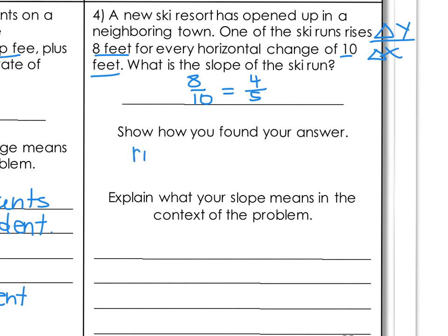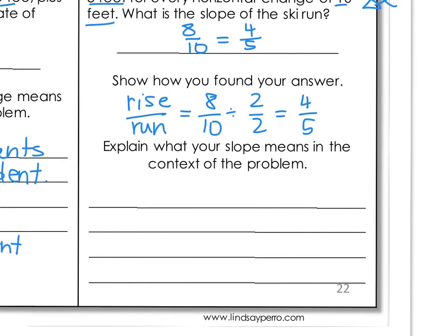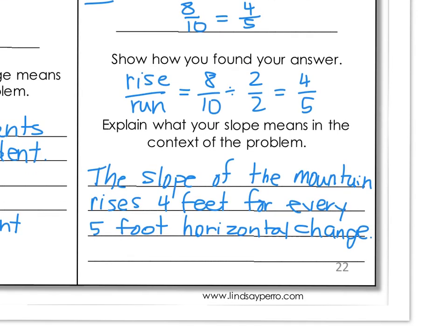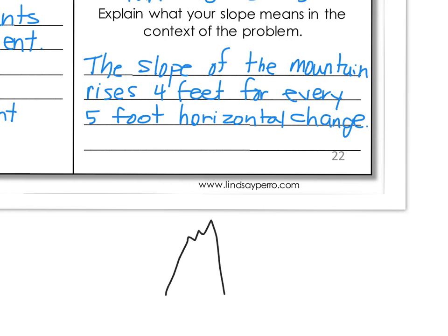How do we find that? Rise over run, which is 8 over 10. Both are divisible by 2, so 8 divided by 2 is 4, and 10 divided by 2 is 5. What does that mean in the context of the situation? For this mountain, the rise is 4 feet for every 5-foot horizontal change. I'll draw the mountain here — going up 4 feet and over 5 feet shows the slope. You can see why my original line was too steep: this slope has more horizontal change than vertical change, which means it's not as steep — probably the slope you'd want to ski on.